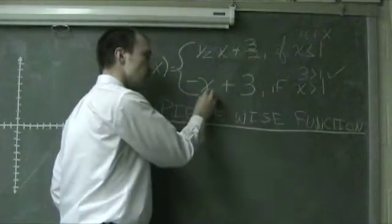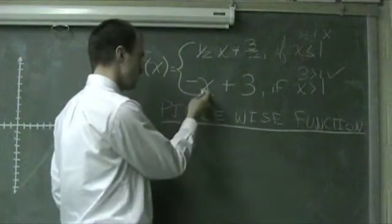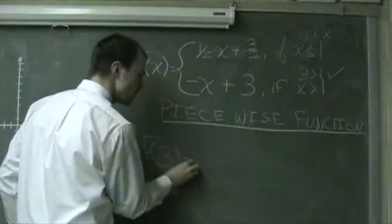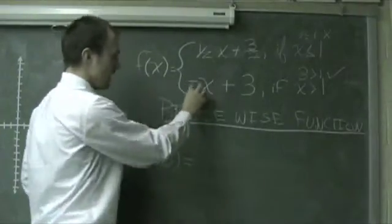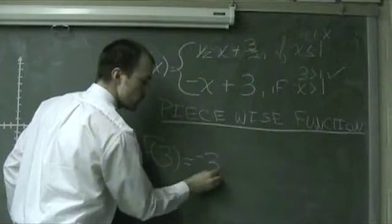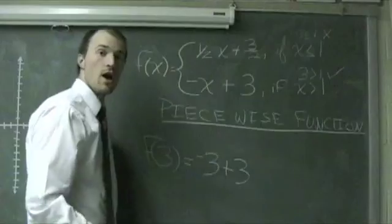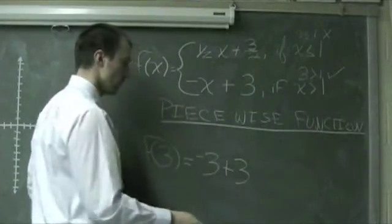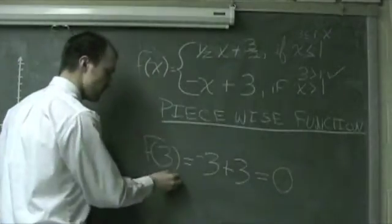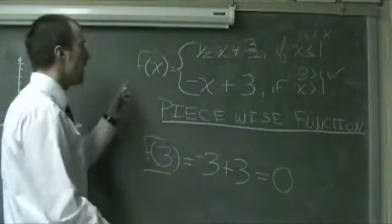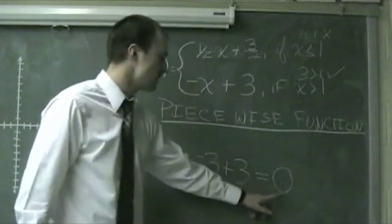So we're going to substitute 3 in for all values of x in this piecewise function. The function value at 3 uses the bottom function, so it will be the opposite of 3 plus 3. Negative 3 plus 3 equals 0, which gives us the function value at 3 of this piecewise function f of x is 0.